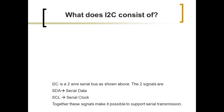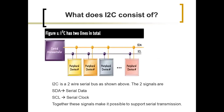I²C is a two-wire serial bus. The two signals are SDA (serial data) and SCL (serial clock). Together these signals form the I²C bus and enable serial transmission between devices.